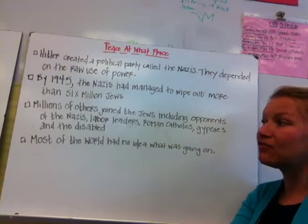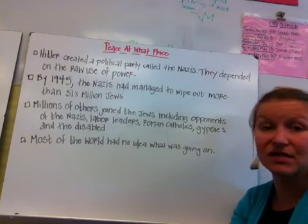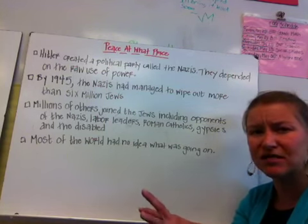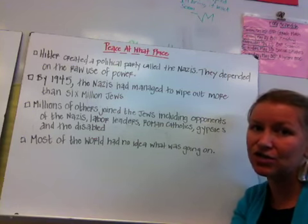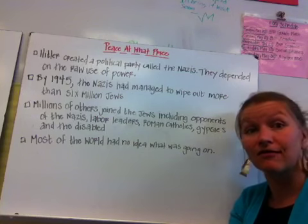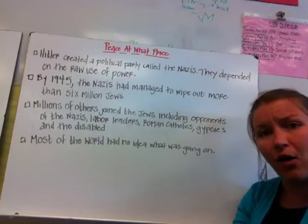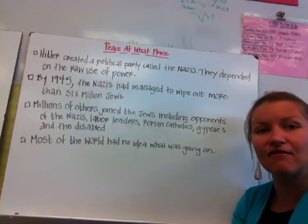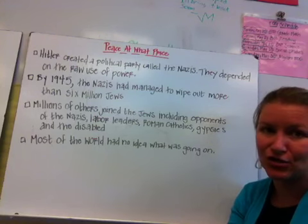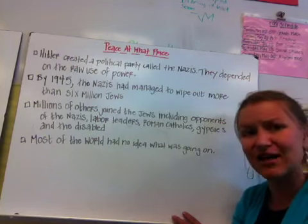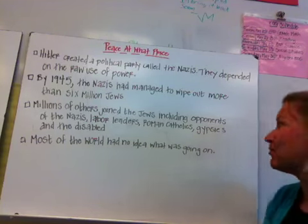Hitler treated these people horribly — six million people died, though that number varies depending on the historian. There are even people who claim the Holocaust never happened, though we can look at that as an interesting example of the many different interpretations people have of history.